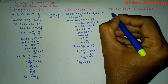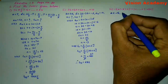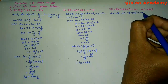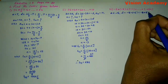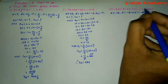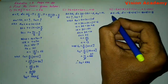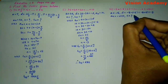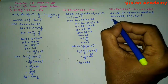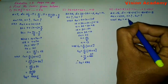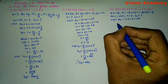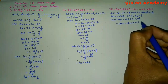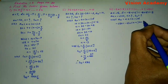Let us solve the third question. Here, the first term A is equal to minus 5 and the common difference D is equal to minus 8 minus of minus 5, which is equal to minus 8 plus 5, giving minus 3. Now, An is equal to minus 230 and we need to find N and SN. We know that An equals A plus (N minus 1) D: minus 230 equals minus 5 plus (N minus 1) into minus 3.